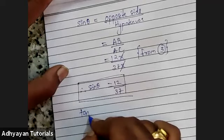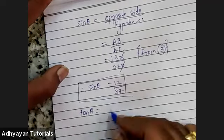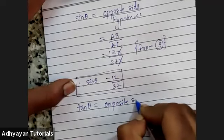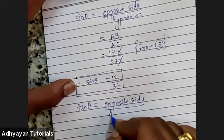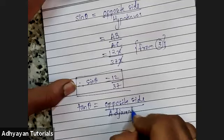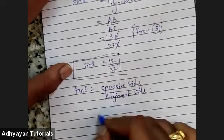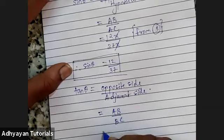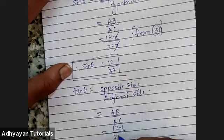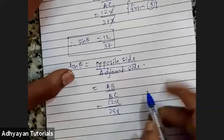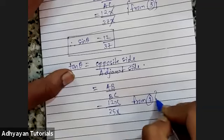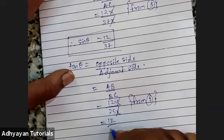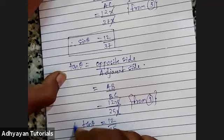The next part: we need to find tan θ. Tan θ = opposite side upon adjacent side = AB upon BC = 12x upon 35x. X, X gets cancelled. The answer is 12/35, and that is our final answer. I hope everybody has understood.